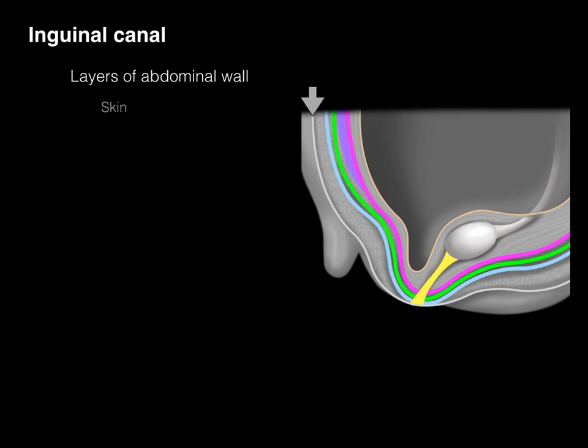To understand the inguinal canal, we need to review the layers of the abdominal wall. This shows a sagittal section of the abdominal wall, pelvis, and perineum of a developing male — a schematic medial view. The most superficial layer is the skin: epidermis and dermis. Next is the hypodermis, which is the Camper's fascia — primarily fat — and Scarpa's fascia, the deeper, more fibrous connective tissue that makes up the hypodermis.